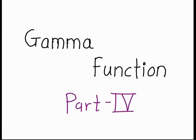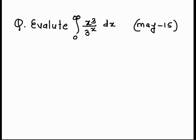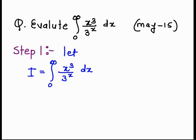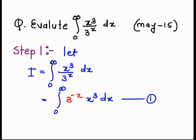Welcome to all. In this video we study gamma function part 4. Let's start with the example. Evaluate the integral from 0 to infinity of x raised to 3 over 3 raised to x dx. Let's consider the integration I equal to the integral from 0 to infinity of x raised to 3 upon 3 raised to x dx. We write this in the standard format of the definition of the gamma function.